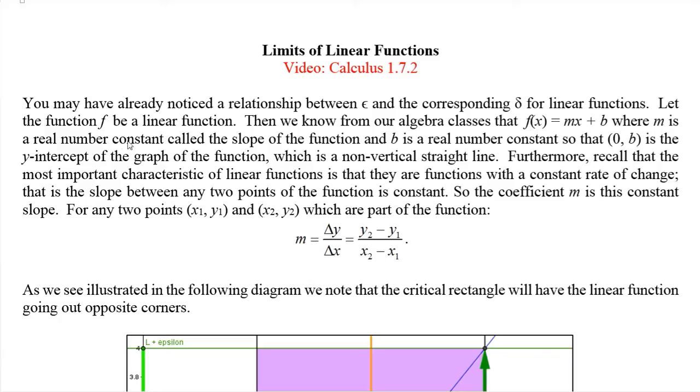Let f be a linear function. We know from our algebra classes that f(x) equals mx plus b where m is a real number constant called the slope of the function, and b is a real number constant so that (0,b) is the coordinate for the point which is the y-intercept of the graph of the function.